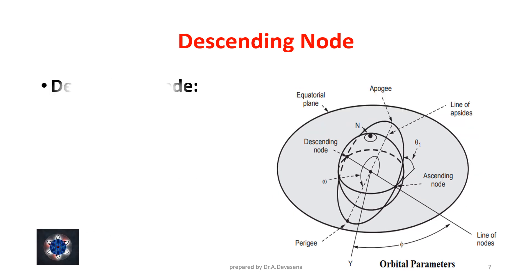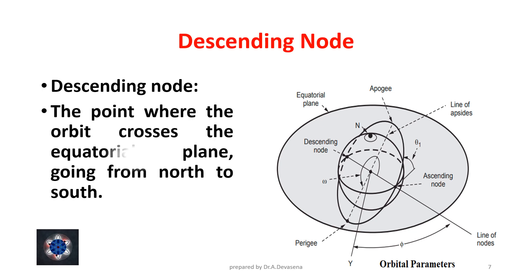Descending Node. The point where the orbit crosses the equatorial plane going from north to south is represented as Descending Node. The Descending Node is shown here.